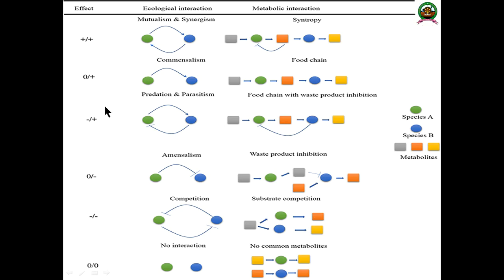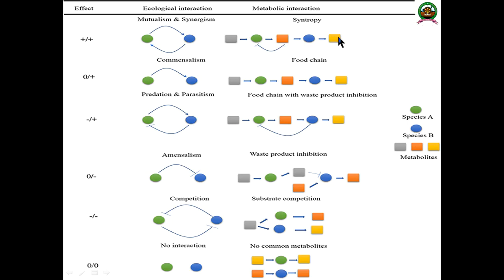A recent review published in Frontiers in Microbiology illustrates ecological and metabolic interactions clearly. In the figure, green indicates Species A and another color indicates Species B, while gray, orange, and yellow indicate metabolites. In mutualism and synergism, which are positive interactions, one species produces metabolites that benefit the other organism, and in return that organism benefits the first — both getting benefit from each other.